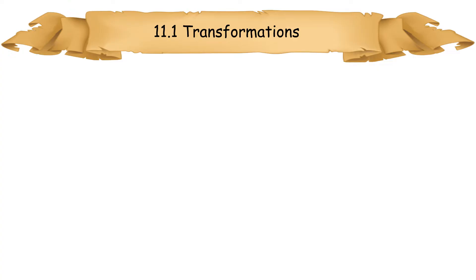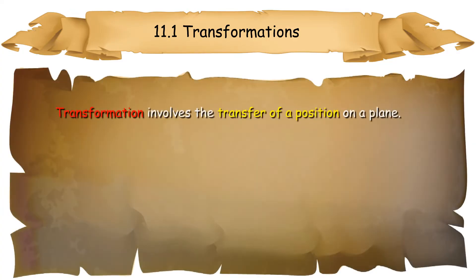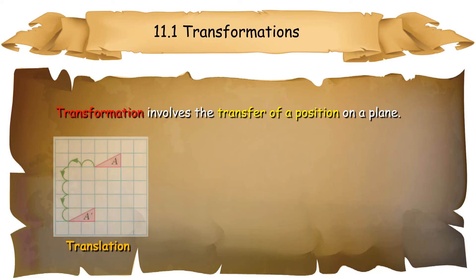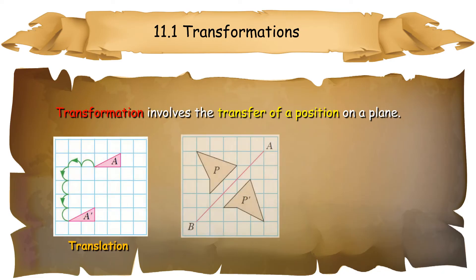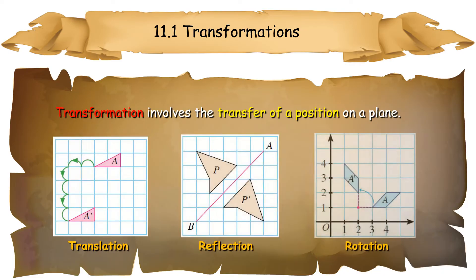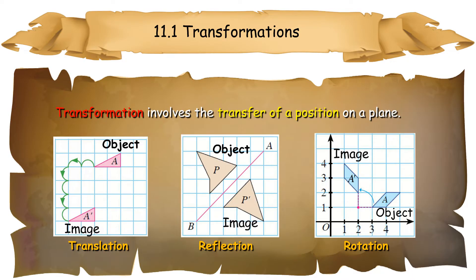11.1 Transformations. Transformation involves the transfer of a position on a plane. Before transformation takes place, the original figure is called the object. After the transformation, the shape is called the image.